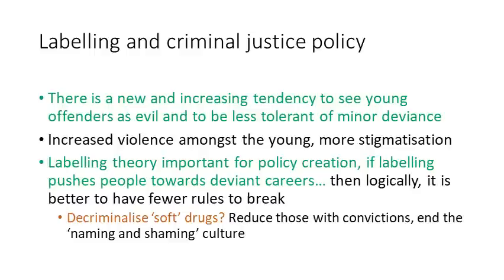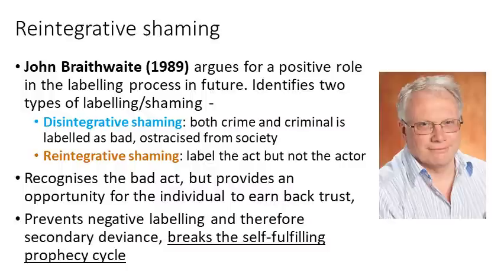In terms of labelling and criminal justice policy, there is a new and increasing tendency to see young offenders as evil and to be less tolerant of minor deviance. Increased violence amongst young people has led to even more stigmatisation of them — we can look at prime examples such as the perceived rising knife crime and how the media has dealt with this. Labelling theory is important for policy creation. If labelling pushes people towards deviant careers, then logically it is better to have fewer rules to break. This has led some interactionists and policymakers to argue that, for example, we should decriminalise soft drugs, reducing the number of individuals — particularly young people — with convictions, ending the naming and shaming culture, and stopping the deviancy amplification spiral in its tracks.